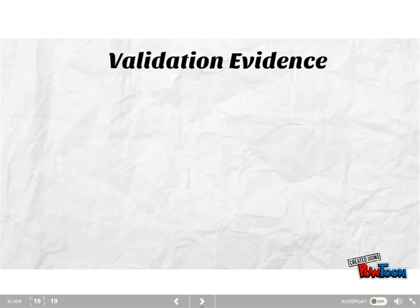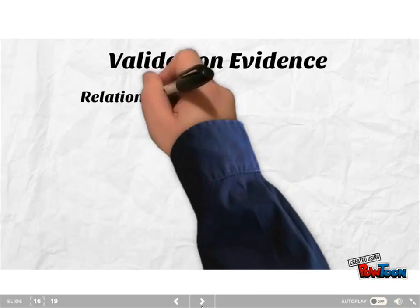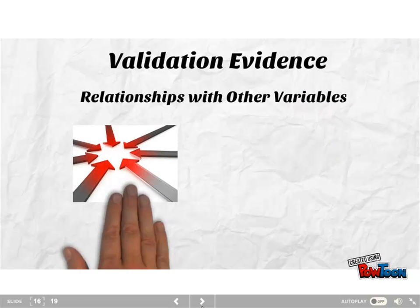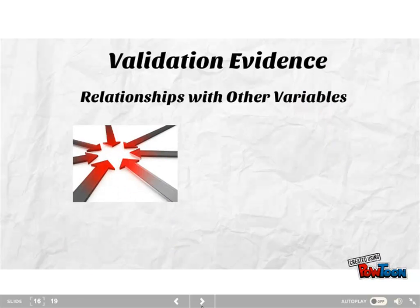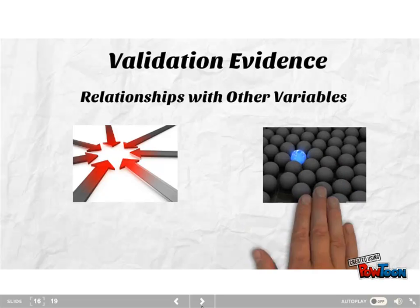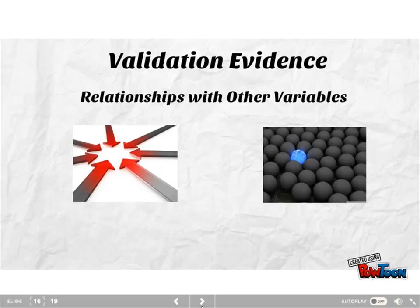We may also want to look at relationships among the variables. We can look at convergent evidence, or correlations with similar variables, which is important if we want to replace one test with a different test. We also need to look at discriminant evidence to rule out the possibility that correlations are due to measures sharing construct-irrelevant variance.